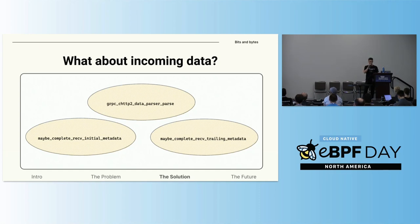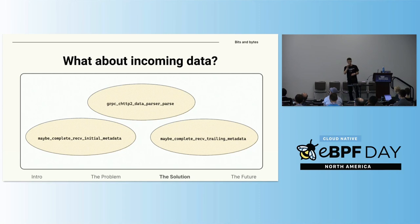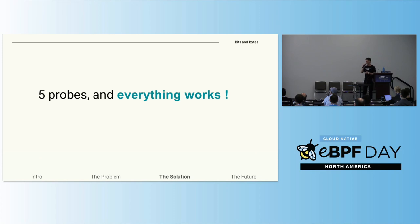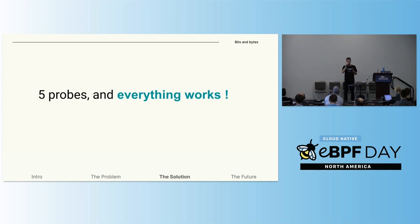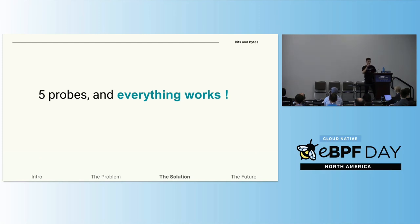For incoming data, we needed three probes — one for the data and two for the headers. So, summing up, with five probes on five library functions — one for the outgoing data, three for incoming data, and the last one to see when the stream is closed — everything works. And that is really exciting to me, so I want to show you this solution put to action.